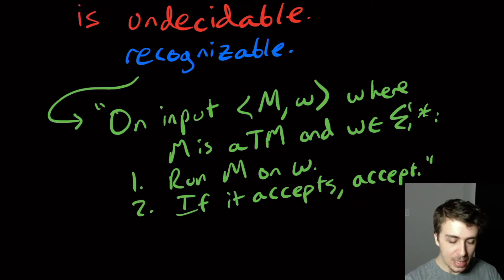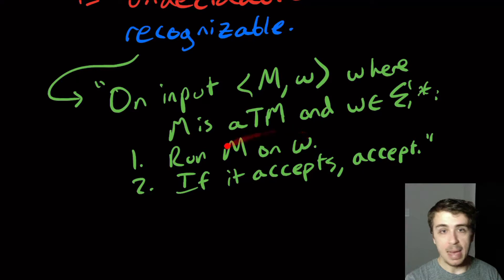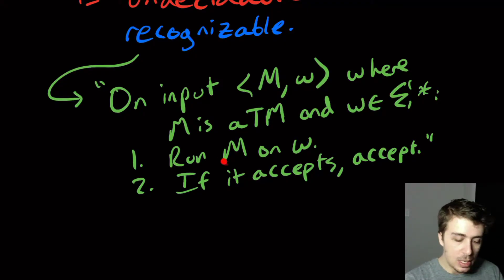But if we have, if this pair is not inside ATM here, then it does not matter what we do here. In fact, we could add a step here to say otherwise just run forever. And if it ran forever on W anyway, we would never reach that step in the first place. So in fact, we wouldn't even reach step two.